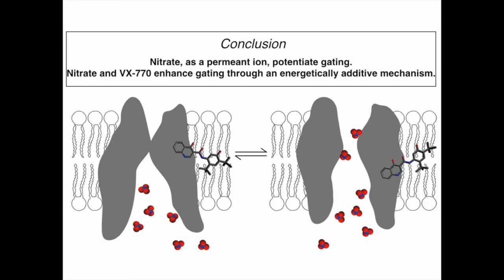We conclude that nitrate as a permeant ion potentiates CFTR gating through a mechanism that is energetically additive to that of VX-770. Although we do not know exactly where nitrate binds, one possible site of action is the actual ion permeation pathway. Thank you very much.